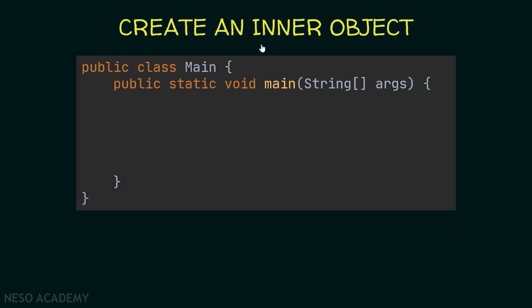Now suppose we want to create an object from the inner class inside the main class, which is outside the outer class. In this case, the visibility of the inner class matters — it currently has default visibility, so we can access it within the same package. Also, since the inner class is associated to an object of the outer class, we need an outer object to create an inner object.